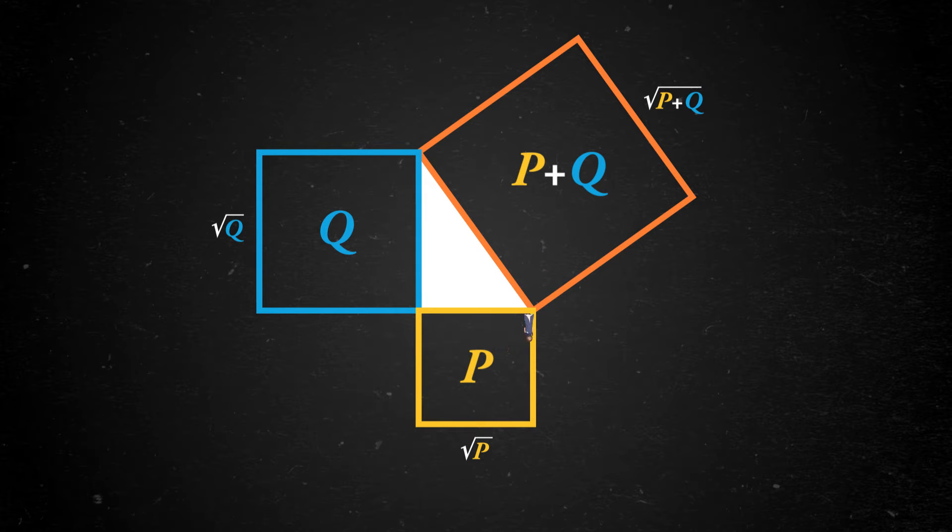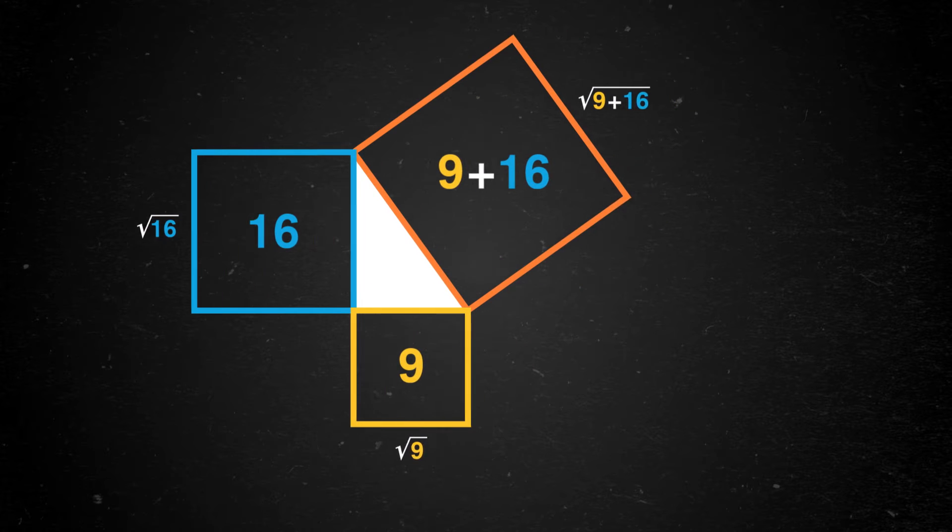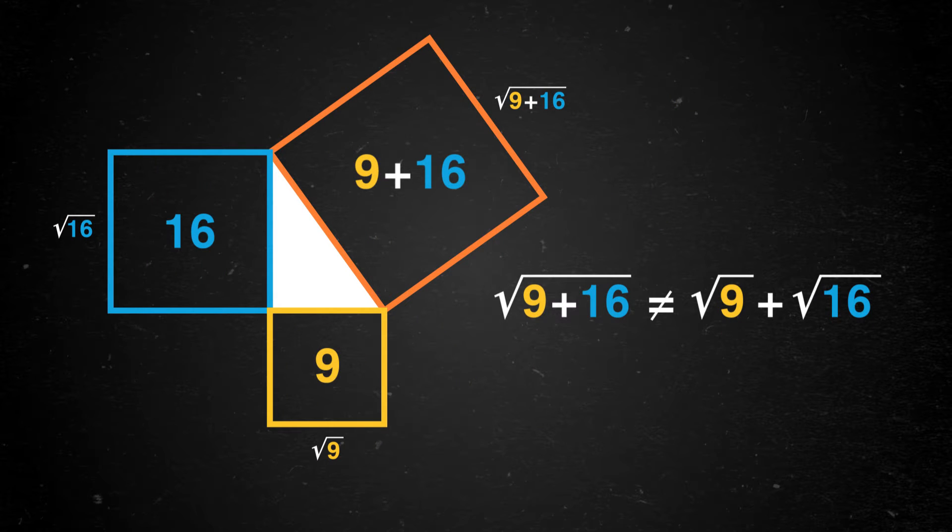What does this have to do with roots? Well, it's tempting to try to combine different square roots with addition, but we can see it just doesn't work. If we plug in numbers to our picture, like 9 and 16, we see the square root of 9 plus 16 does not equal the square root of 9 plus the square root of 16.